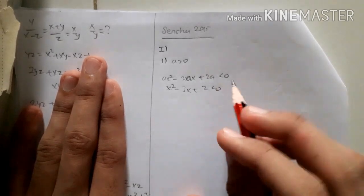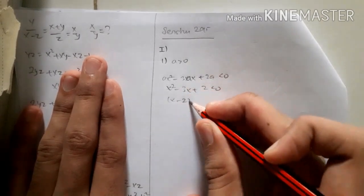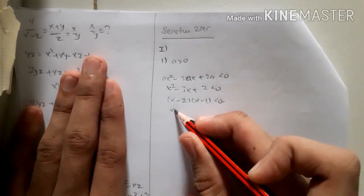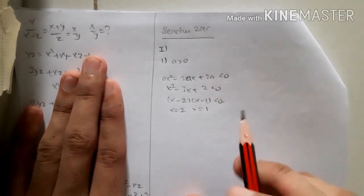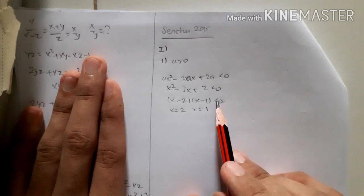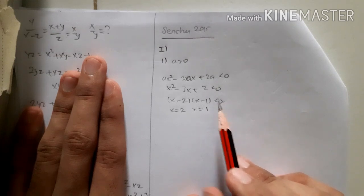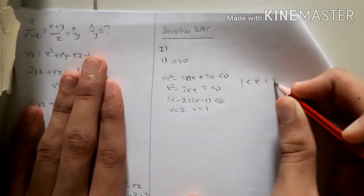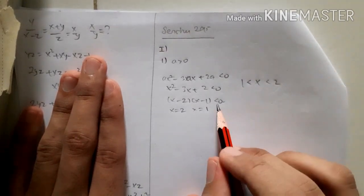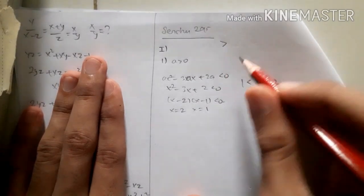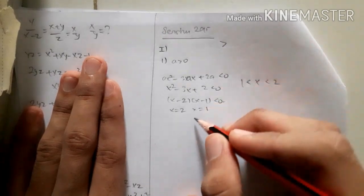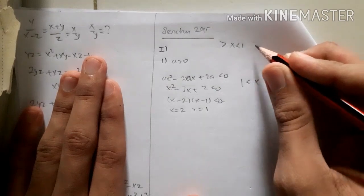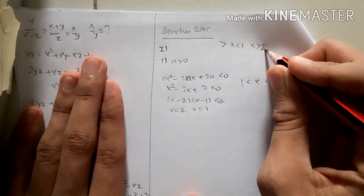We factorize and get x minus 2 and x minus 1, so the roots are x equals 2 and x equals 1. Remember: if you have the sign of less than, the interval is 1 less than x less than 2. If you have greater than, the interval would be x less than 1 or x greater than 2.